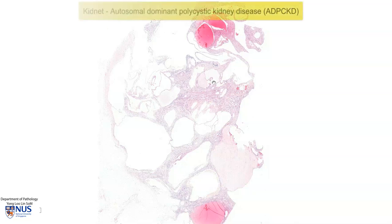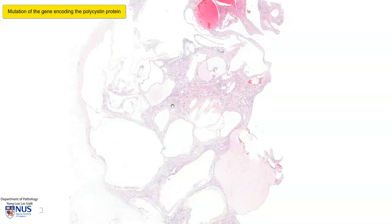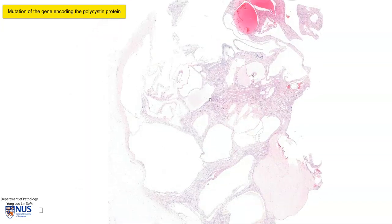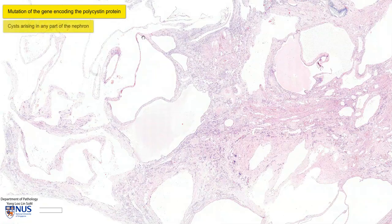Hello, this is a virtual microscopy slide of a case of autosomal dominant polycystic kidney disease. This is a genetic condition that occurs when there is mutation of the gene that encodes the polycystin protein. The exact mechanism of cyst formation is still unknown, but what we have is multiple cysts that occur in any part of the nephron.